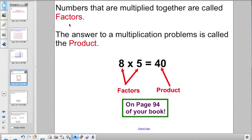So, this isn't quite as simple, and they're going to ask us this a lot. Numbers that are multiplied together are called factors. The answer to a multiplication problem is called the product. So, when eight times five equals 40, eight and five are factors, 40 is the product. This answer can be found on page 94 of your book, or also, you can look it up in the glossary in the back of your math book.